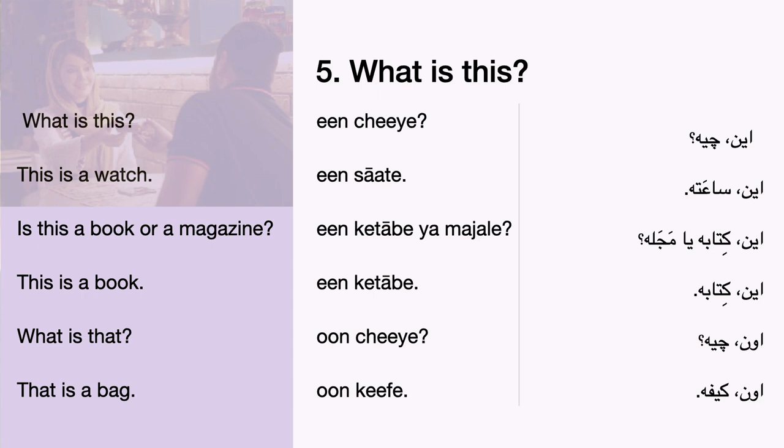Now it's your turn to participate in the conversation. How would you ask: what is this? This is a watch. Say, this is a watch. To ask a yes or no question, you can simply use question intonation. Now how would you ask: is this a book or a magazine? This is a book or a magazine? Try to say: this is a book.